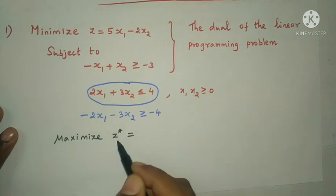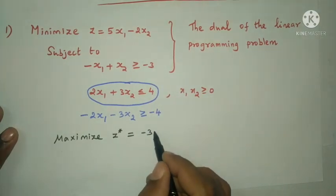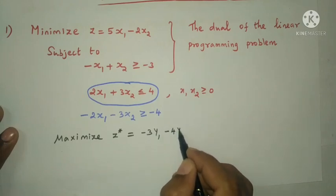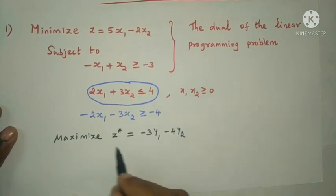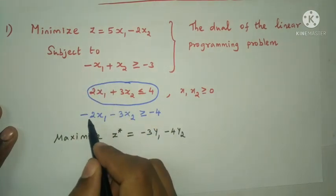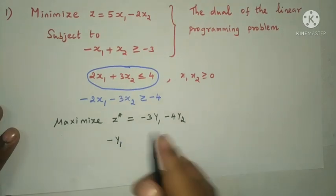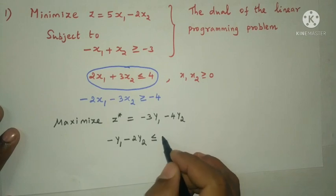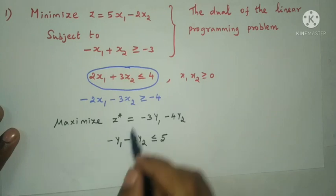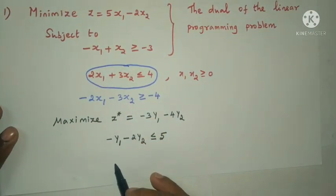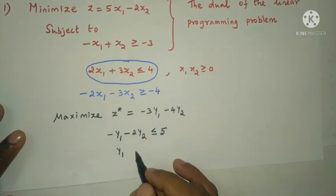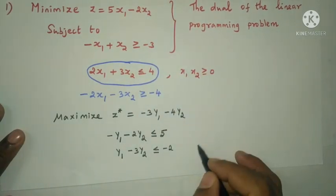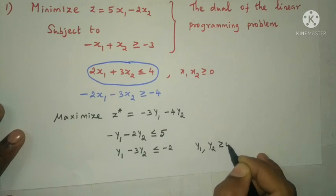The dual objective function is: minimize z* equal to minus 3y1 minus 4y2. The dual constraints are: minus y1 minus 2y2 less than or equal to 5; y1 minus 3y2 less than or equal to minus 2; where y1 and y2 are greater than or equal to 0.